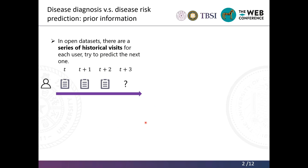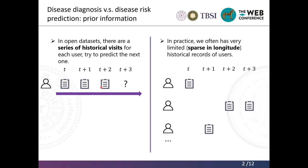A difference between our work and previous work is that in open datasets, there are always a series of historical visits for each user. Previous works just try to predict the next risk prediction of different diseases. For example, for a user, we might get their historical records from time t, t plus one, t plus two, and we need to do the prediction of their disease risk for the next time step. But in practice, we often have very limited historical visits of different individuals. We might get only one historical visit of a user and have to make a prediction based on their current clinical notes.